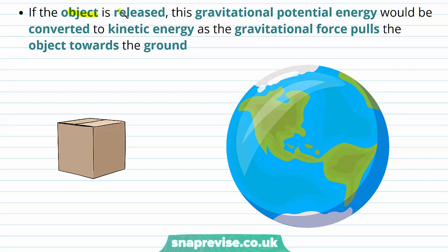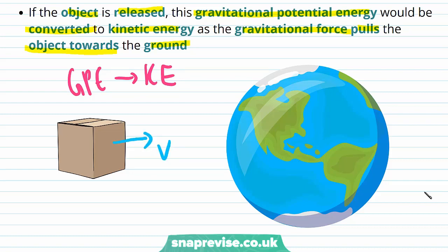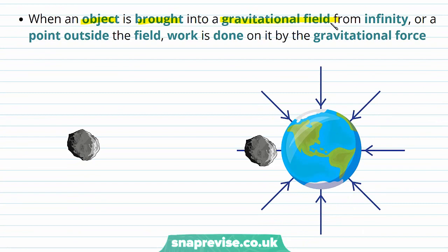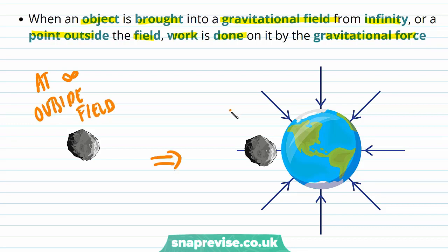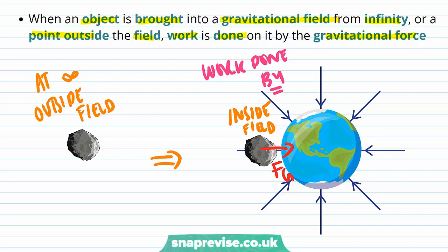If the object is released from its height, this gravitational potential energy will be converted to kinetic energy as the gravitational force pulls the object towards the ground. When an object is brought into a gravitational field from infinity, or a point outside the field, work is done on it by the gravitational force — we're moving in the same direction as Fg, towards the Earth.